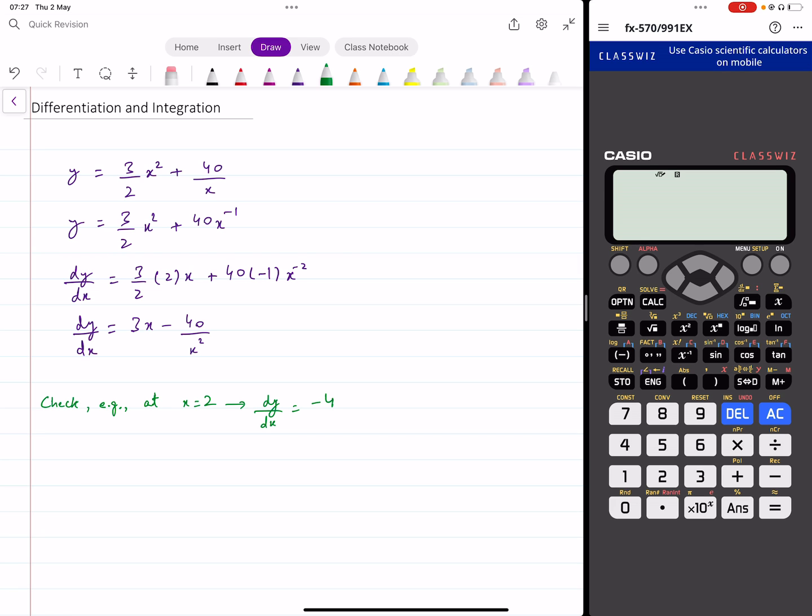But how do you do the verification? So let's say you've got this function y equals 3 over 2 x squared plus 40 over x and we find the derivative of that and the derivative turns out to be this.